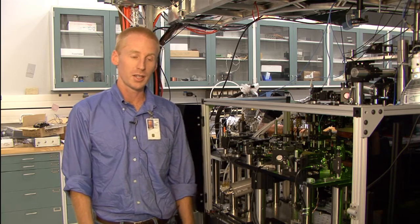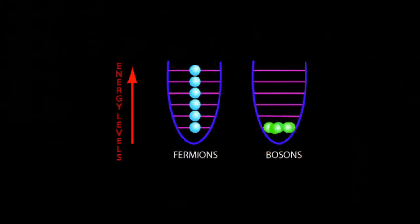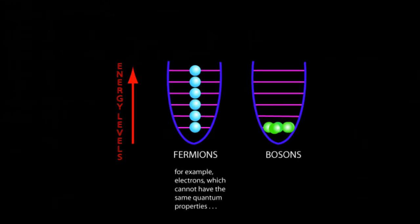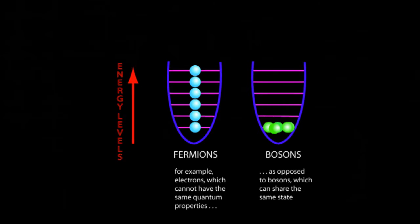The atoms we have are called bosons, which means they have a propensity to occupy the same quantum state. Whereas electrons, as you might have learned in chemistry class, no two electrons have exactly the same quantum state. So it's similar to electrons but different in key ways.